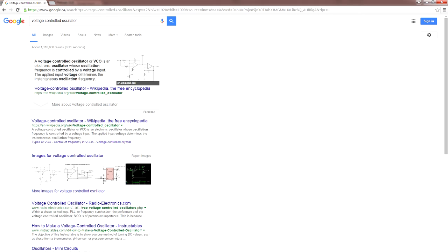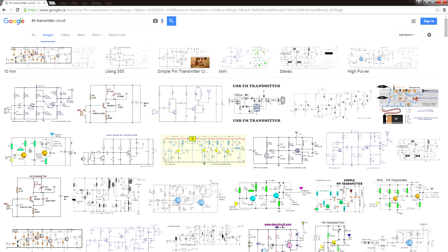The type of circuit that we want here is called a voltage controlled oscillator, or VCO. There are many different types of voltage controlled oscillator circuits out there, but not all of them are suitable for FM radio. And there are many FM transmitter circuits out there, but in my experience most of them are very unstable, so I made my own.